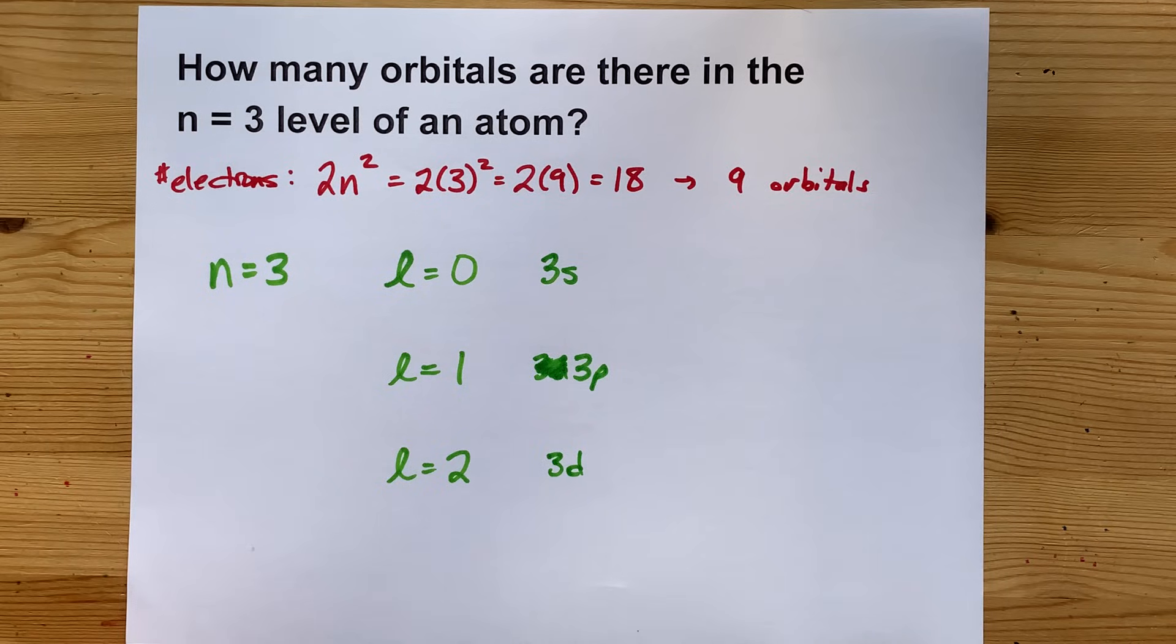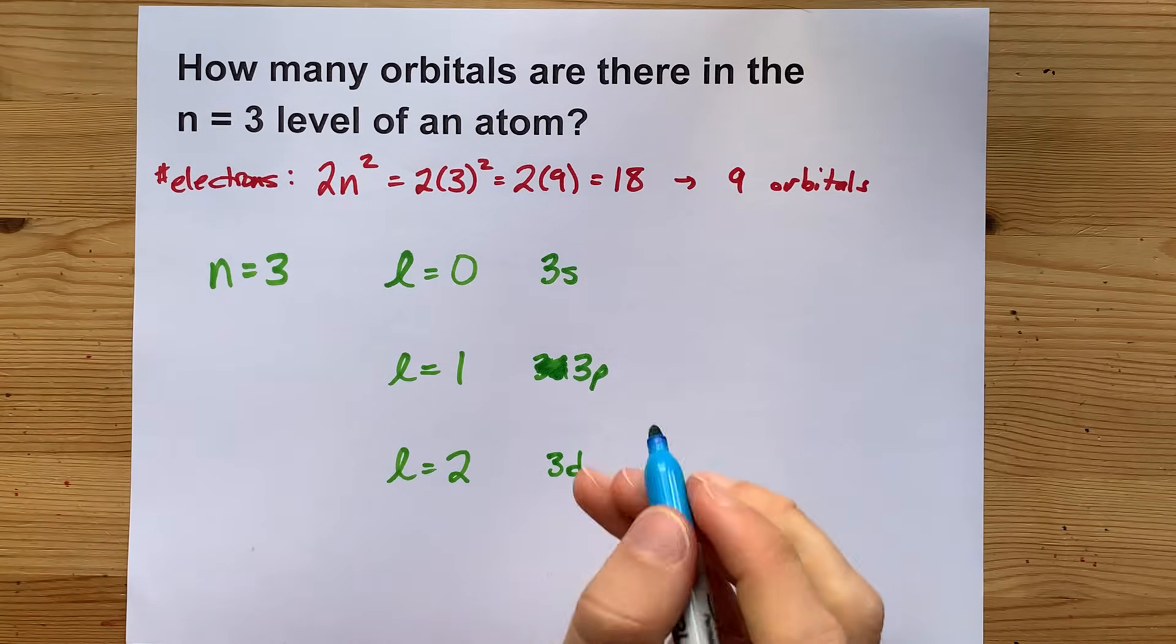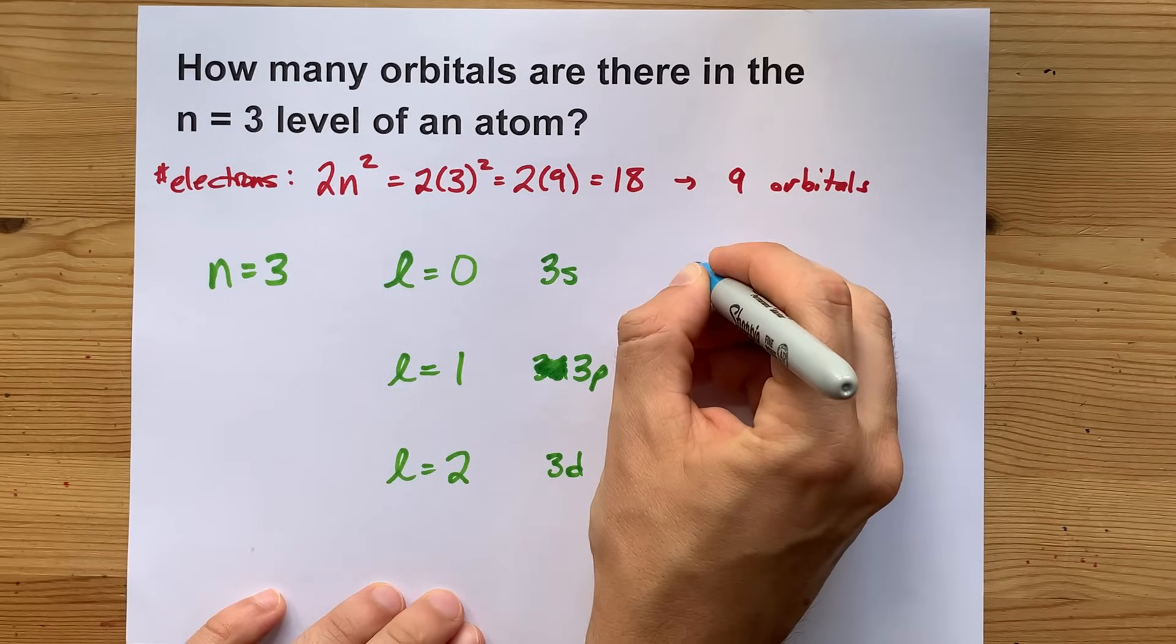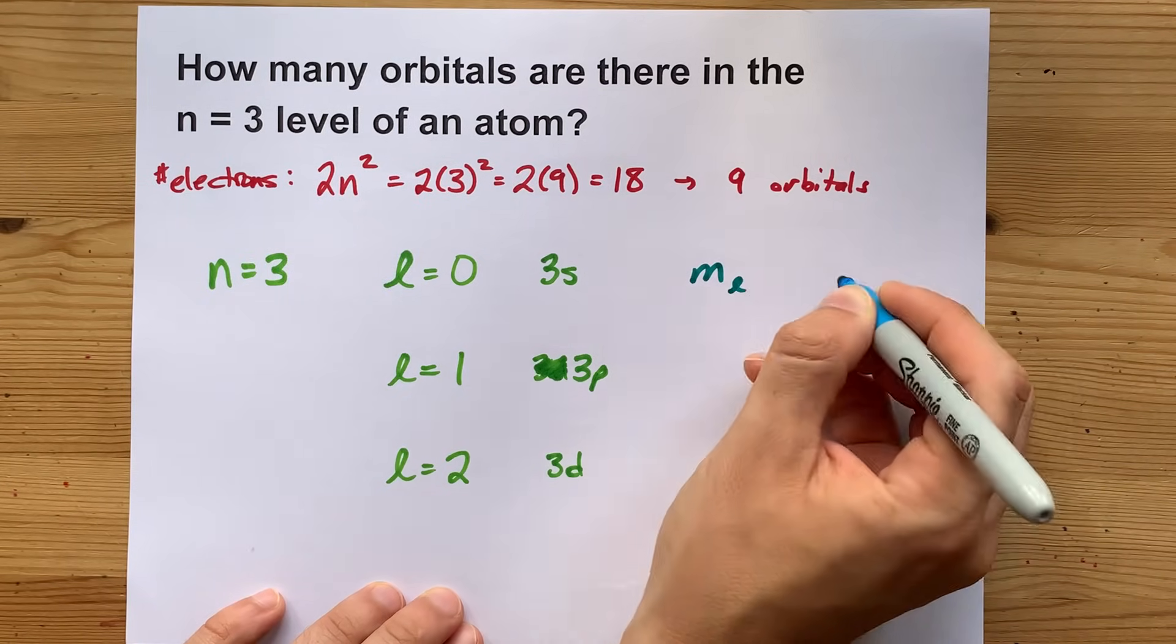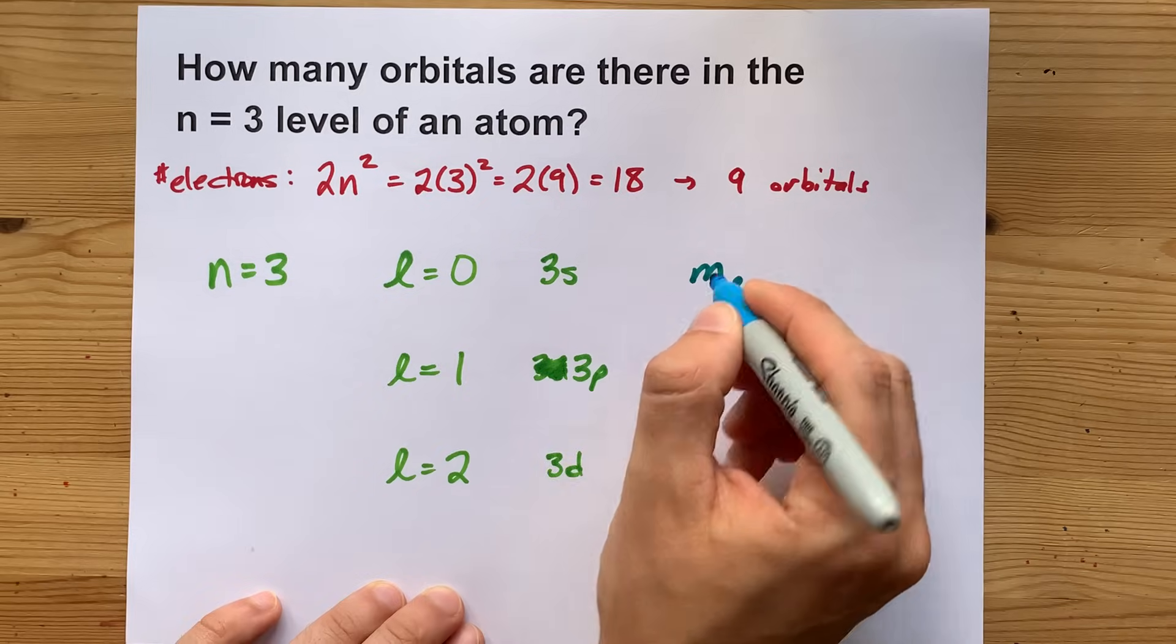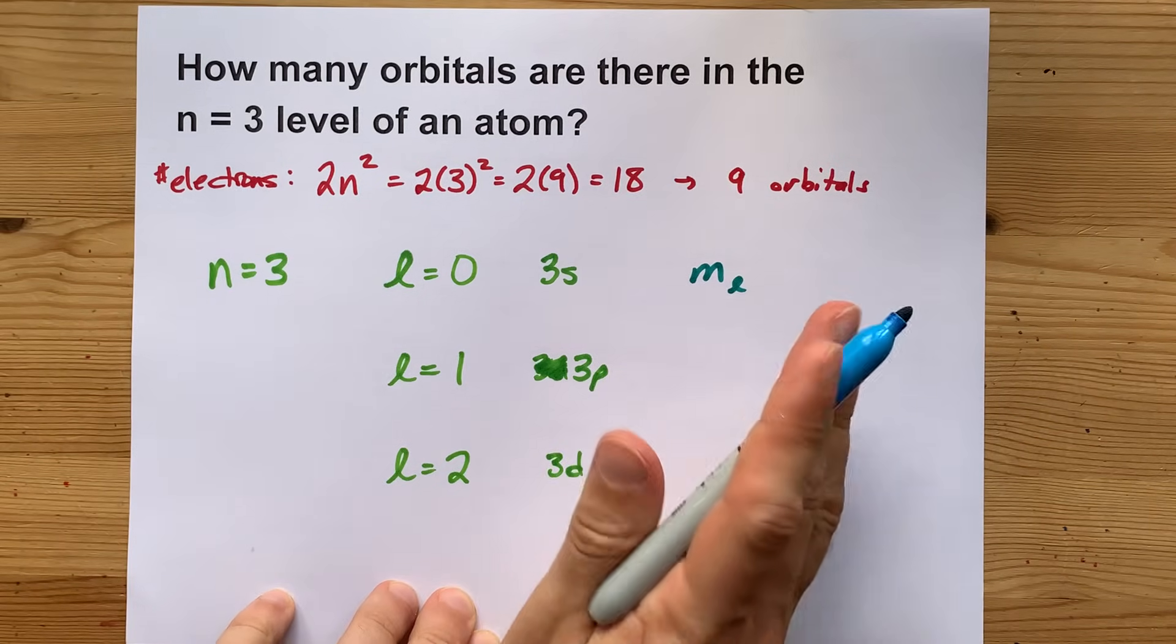But what probably matters to you as well is how many orbitals fit in each of those? That's what ML is for. Now ML has one distinct value per orbital.